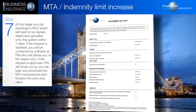If the request is declined, you will be contacted by a broker at PIA who will advise you of the reason why. If the request is approved, PIA will email you so you can log in and download the MTA endorsement and forward this to your client.